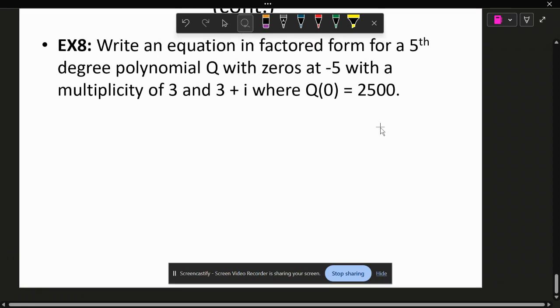Example number eight says write an equation in factored form for a fifth degree polynomial with zeros at negative five with a multiplicity of three, and three plus i, where Q(0) is equal to 2,500. So the only thing new from what we did yesterday is this Q(0) equals 2,500.